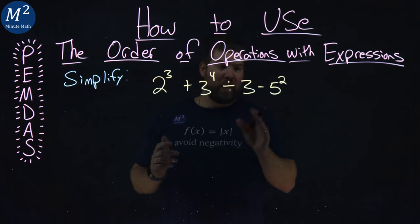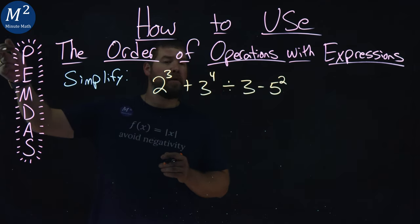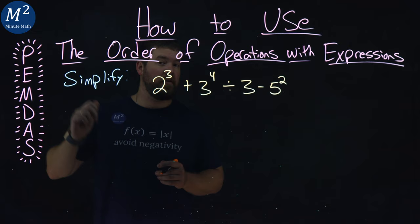This one's interesting, we have a lot of exponents here. So we go through PEMDAS, we have no parentheses, but we have lots of exponents, so that's next.